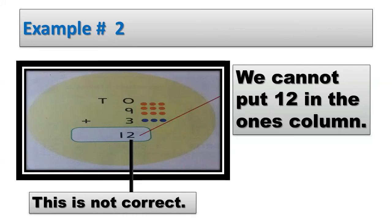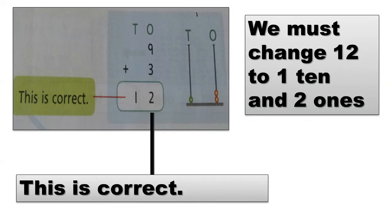Here the answer comes 12, so here we write 12 like this. Is it correct? No, this is not correct. As we know that the answer is 12, but here also we cannot write 12 in the 1s column. We must change 12 into 1 ten and 2 1s. So we write our answer like this: 2 in the 1s column and 1 in the 10s column. This is correct.